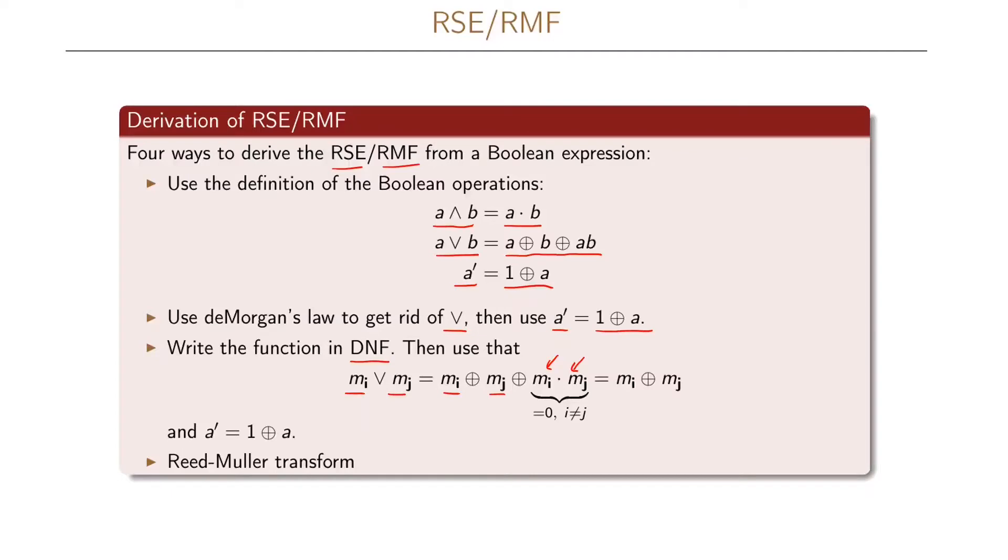And then for each of these min terms that we now sum together, we will again use the fact that a prime equals 1 plus a. And finally, this normal form can be derived using the Reed-Muller transform, but this is not anything that we're going to look at in detail in this course. If you want to see explicit examples of how to do these three first ways of deriving the RSE or the RMF for the Boolean function, then I suggest you go back to the video where we discuss the Reed-Muller canonical form.